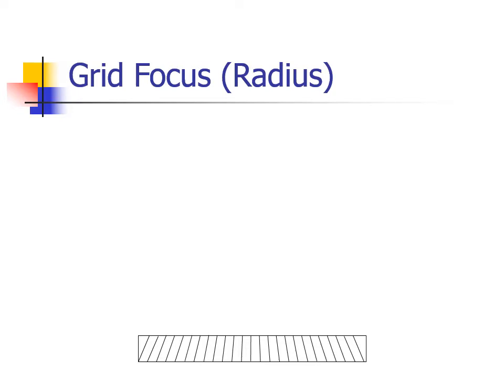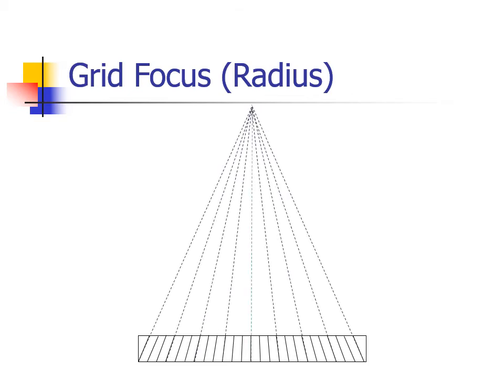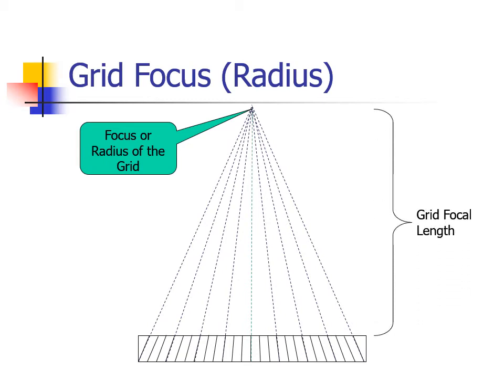If we draw imaginary lines extending from the lead strips in our focused grid, we will see that they all converge at a point above the center line of the grid. This line is called the focus or radius of the grid. The focal spot of the X-ray tube should be positioned near this distance and centered to the grid to allow it to effectively eliminate grid cutoff.